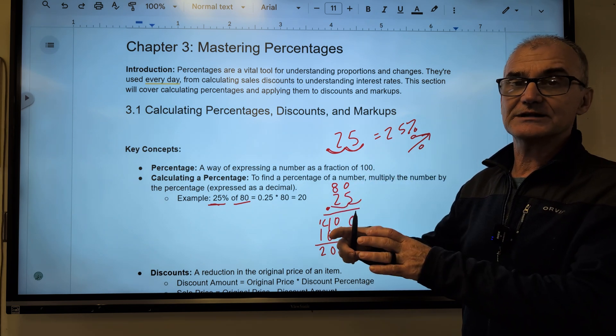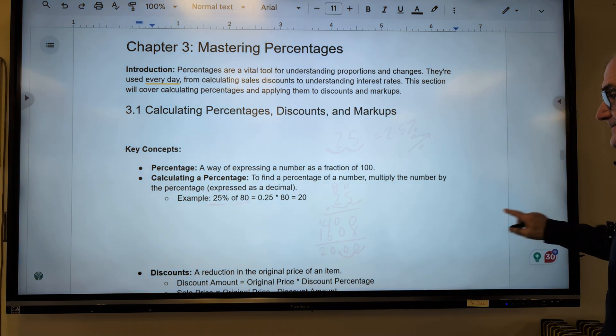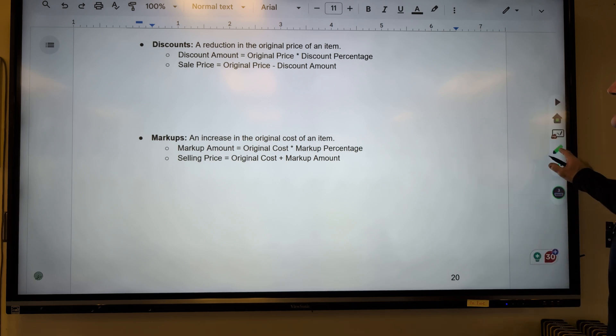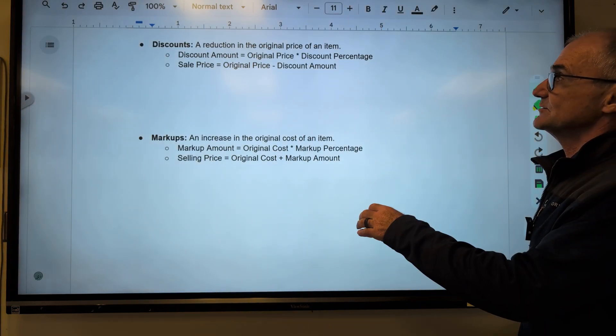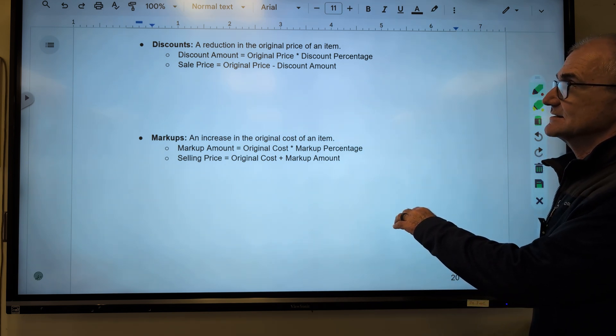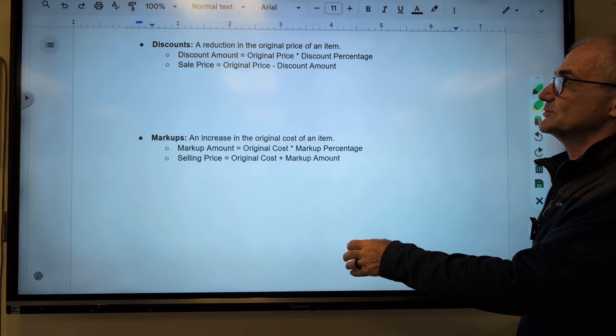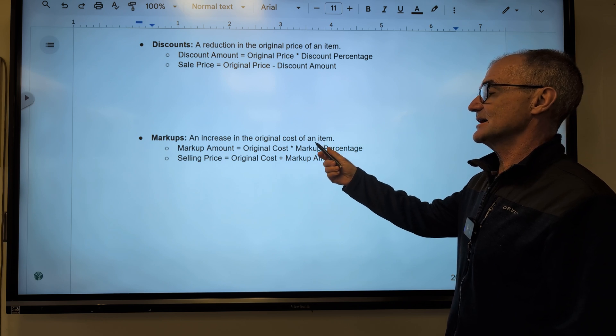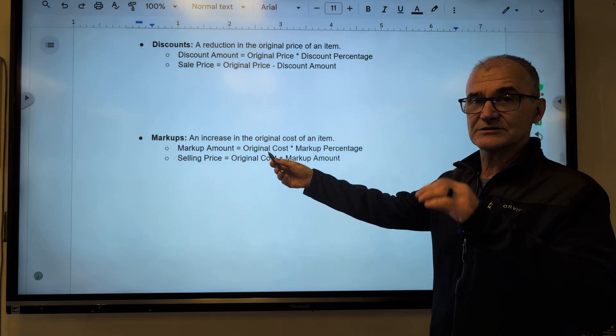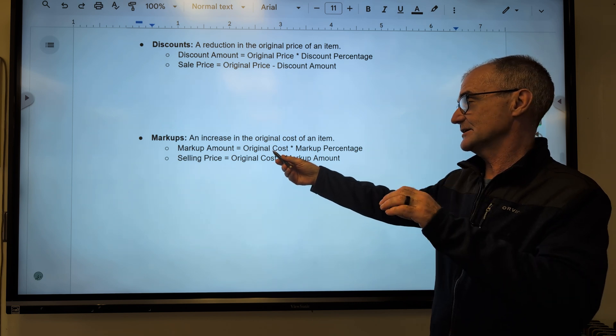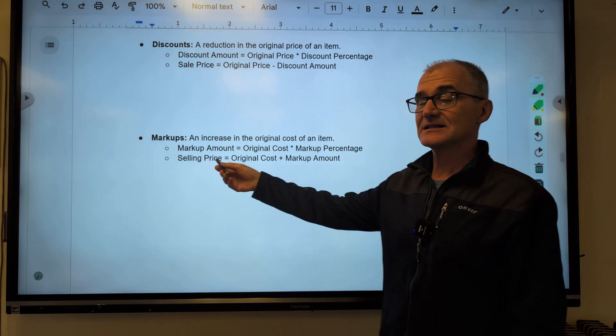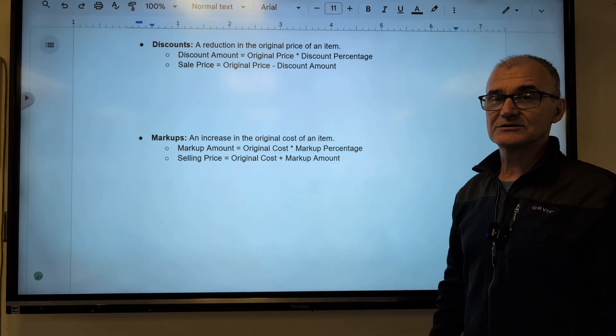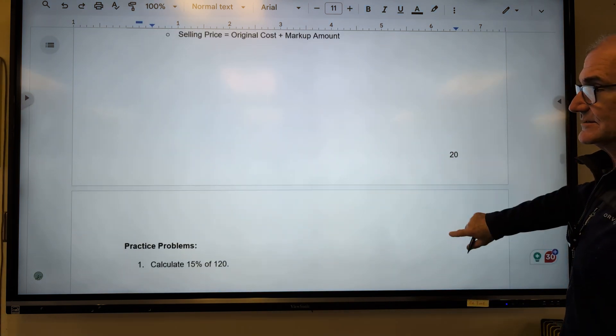Discounts. A discount is a reduction in the original price of an item. The discount amount is equal to the original price times the discount percent. So the sales price is going to be the original price minus the discount. Markups, an increase in the original cost of an item. So the markup amount will be the original starting point of the item for getting marked up times the markup percentage. And then the selling price is going to be that original amount plus that additional markup amount. Let's take a look at a few of those.